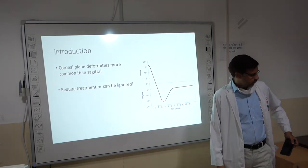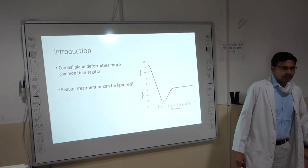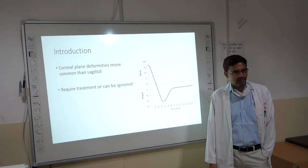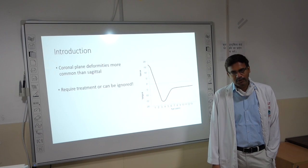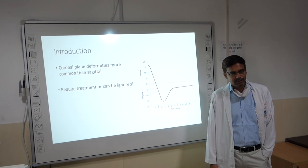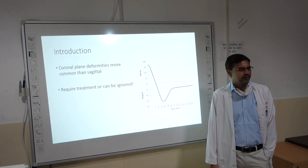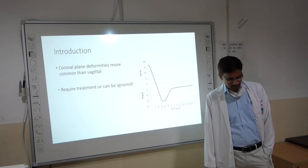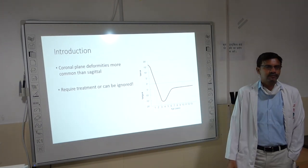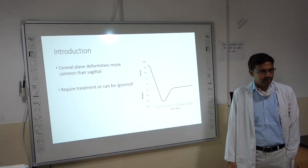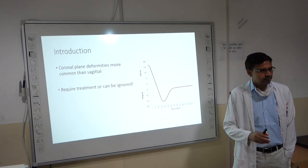Coronal plane deformities are more common in the knee joint than other plane deformities like torsional deformities or sagittal plane deformities. Coronal plane deformities means genu varum and genu valgum, while sagittal plane deformities are anticurvatum or recurvatum, and there are also torsional deformities. But the most common deformities we come across in day-to-day practice are the coronal plane deformities — that is genu varum and genu valgum.